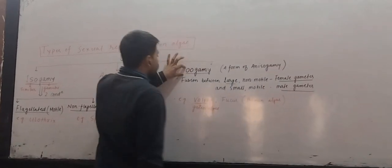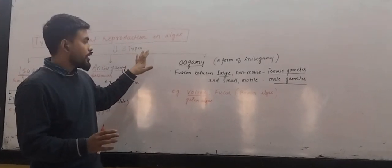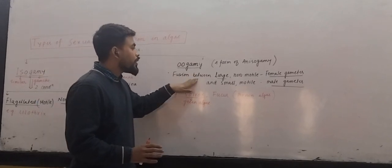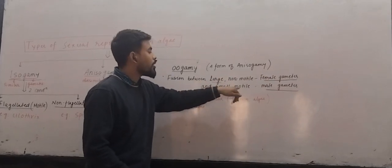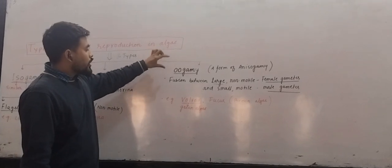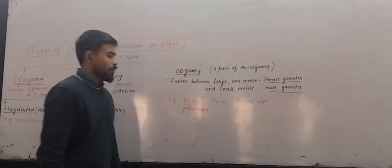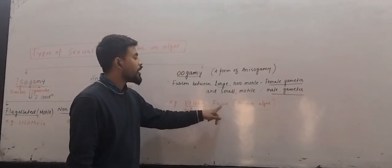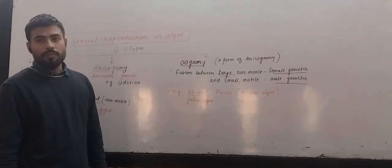Lastly, we have oogamy. It is the most advanced form of sexual reproduction. In oogamy, there is fusion between large non-motile female gametes and small motile male gametes. We have two examples: one is Volvox, which is a green alga and shows oogamy, and the second example is Fucus, which is a brown alga and also shows oogamy.